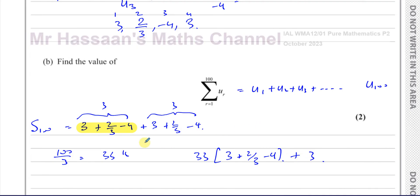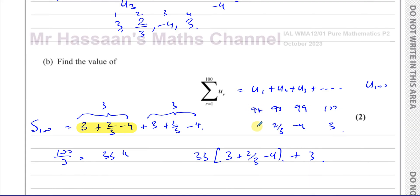The 99th term will be minus 4, the 98th term will be 2 thirds, and the 97th term is going to be 3. So altogether you have 33 sets of these numbers. That's 33 times (3 plus 2 thirds minus 4), and then plus 3.